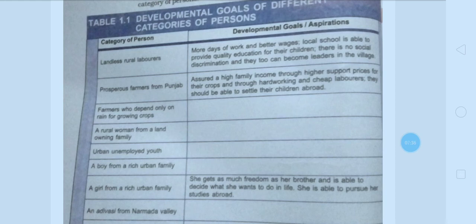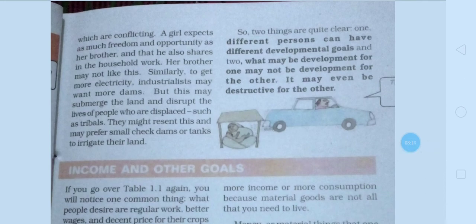Going back to the previous example — the prosperous Punjab farmer wanted cheap labor and hard work from laborers for less pay. But if we consider the laborer's goal, it was better wages so that they could improve themselves. So what is development for one may be harmful for the other. One's development can be destructive for the other.